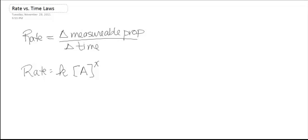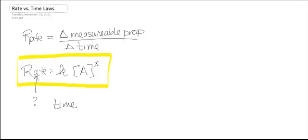This second equation is the one we tend to use more often for calculations, except the problem is that the rate is not really measurable. It was easily measured in the lab when we measured a color change, but it's difficult to measure a change in concentration without taking into account time. So we need to put these two equations together so we can literally measure something with a stopwatch.